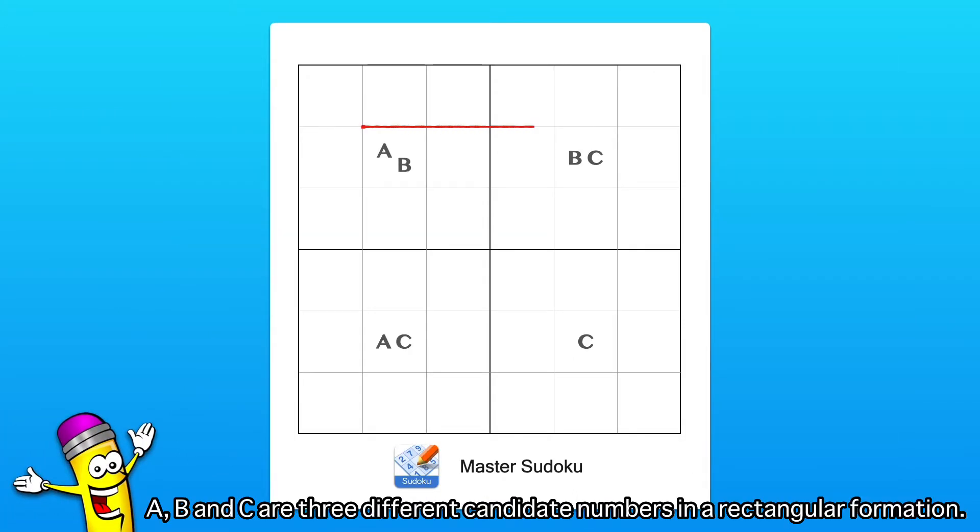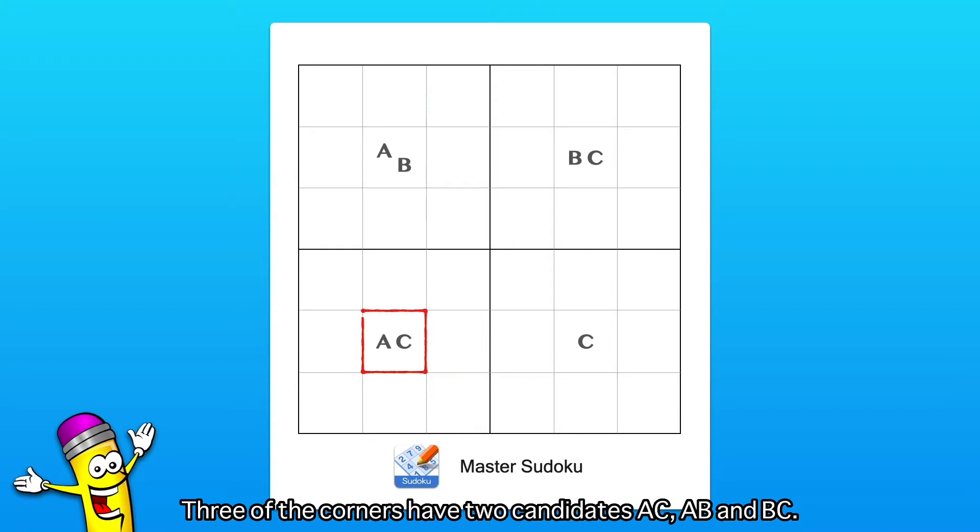Look at this figure. A, B, and C are three different candidate numbers in a rectangular formation. Three of the corners have two candidates: A, C; A, B; and B, C.